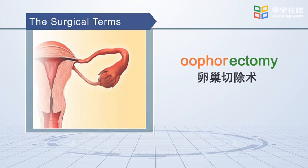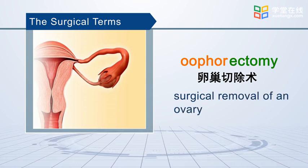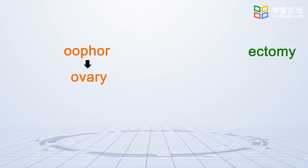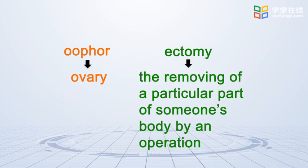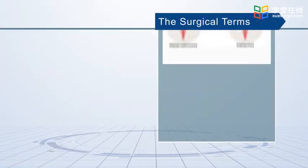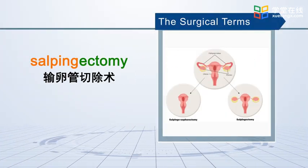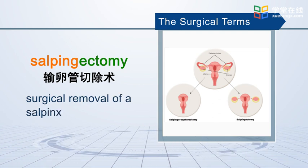Oophorectomy: surgical removal of an ovary. Salpingectomy: surgical removal of a salpinx (fallopian tube).